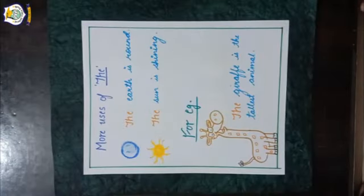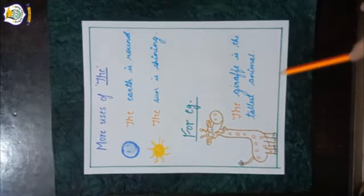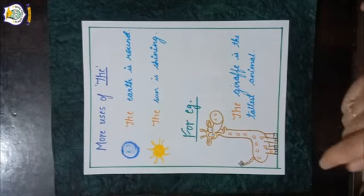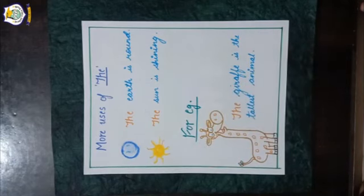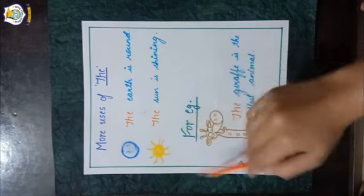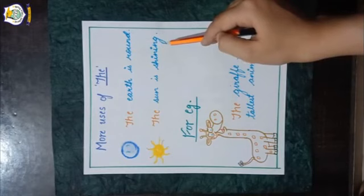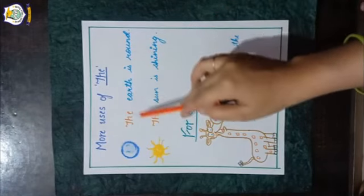The word 'the' is used before a noun which refers to only one thing of its kind. There is only one sun and one earth. So we say: 'The earth is round' and 'The sun is shining'. We use 'the' before these words — before 'earth' as well as before 'sun'.